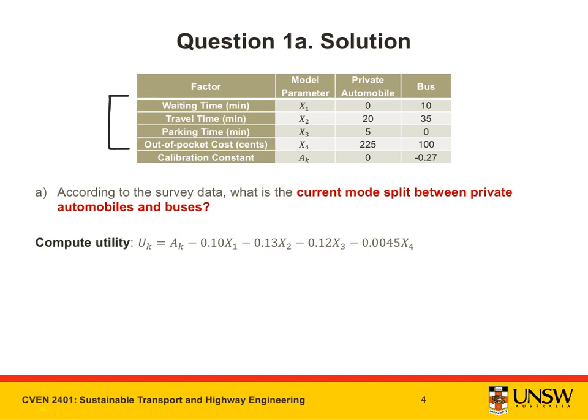We can see that the waiting time, travel time, parking time, and out-of-pocket cost all act to decrease the utility of a particular mode, as they are assigned negative weights in the utility function.